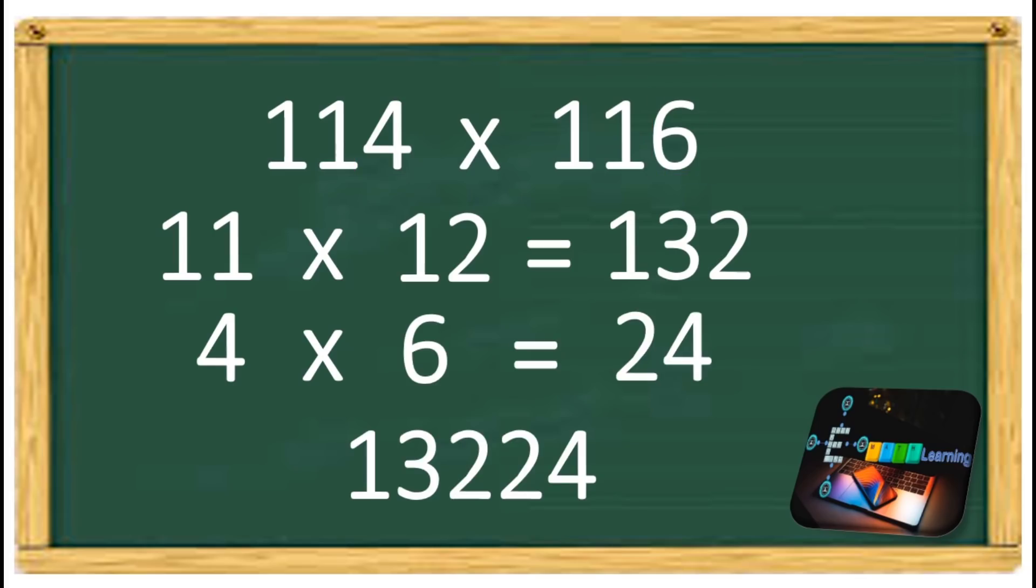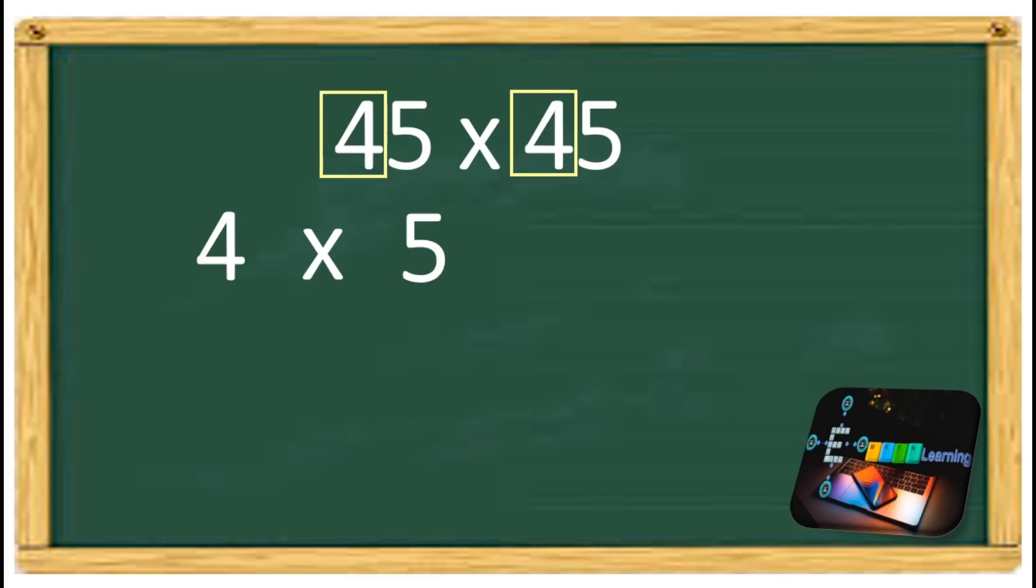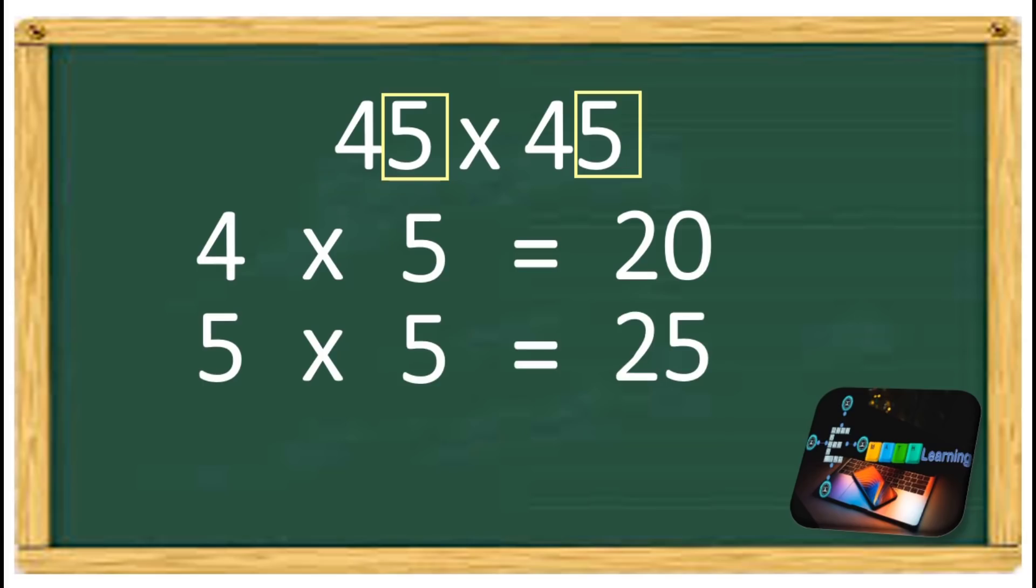If you square a number, for example 45 times 45, follow this trick. 4 times 5 equals 20. 5 times 5 equals 25. So 45 times 45 equals 2,025.